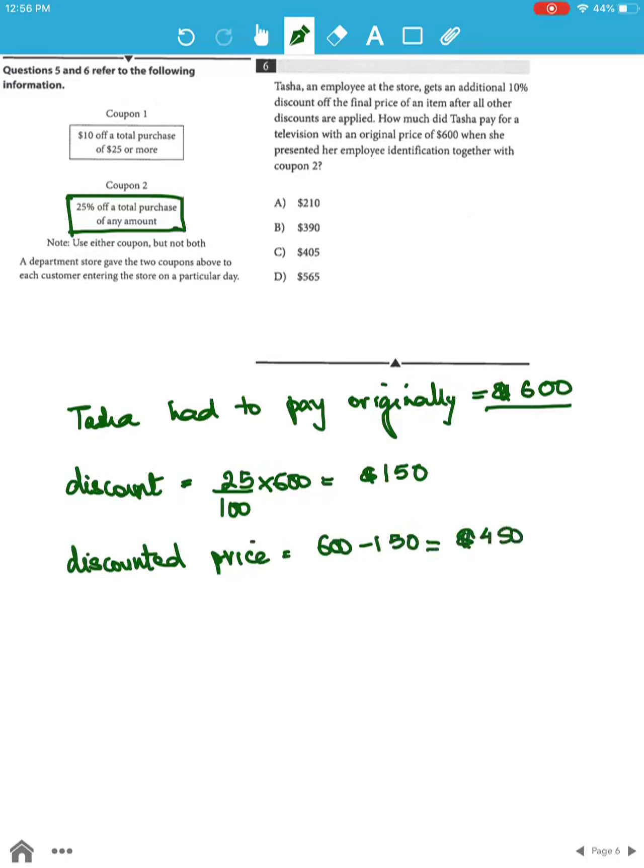Now on this she gets an additional 10% discount of the final price. That means the price after the 10% discount will be $450 minus 10% of $450, which is $450 minus $45, which equals $405. This is option C.